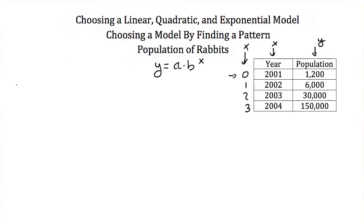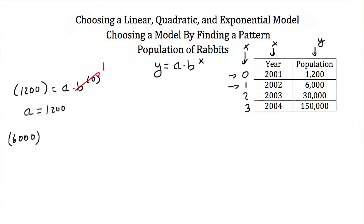Plugging in (0, 1200): 1200 = a · b⁰. Since b⁰ = 1, we get a = 1200. Next I plug in (1, 6000): 6000 = 1200 · b¹. Dividing both sides by 1200 gives b = 5.